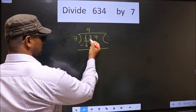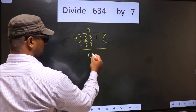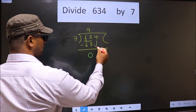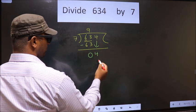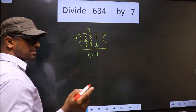Now you subtract. 63 minus 63 is 0. Now you bring down the beside number down, that is 4. This is where the mistake happens.